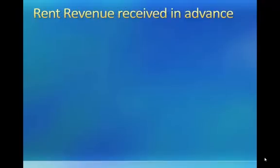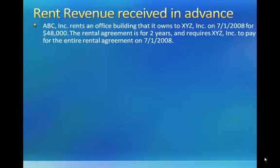Let's start with rent revenue received in advance. If a firm receives rental payments at or before the beginning of the rental term, then they must establish a liability account for the full amount of the rental payments received. They call this liability unearned rent revenue. And as time goes by and the rent is earned, they can record rent revenue and reduce the amount of unearned revenue liability through adjusting entries at the reporting dates.